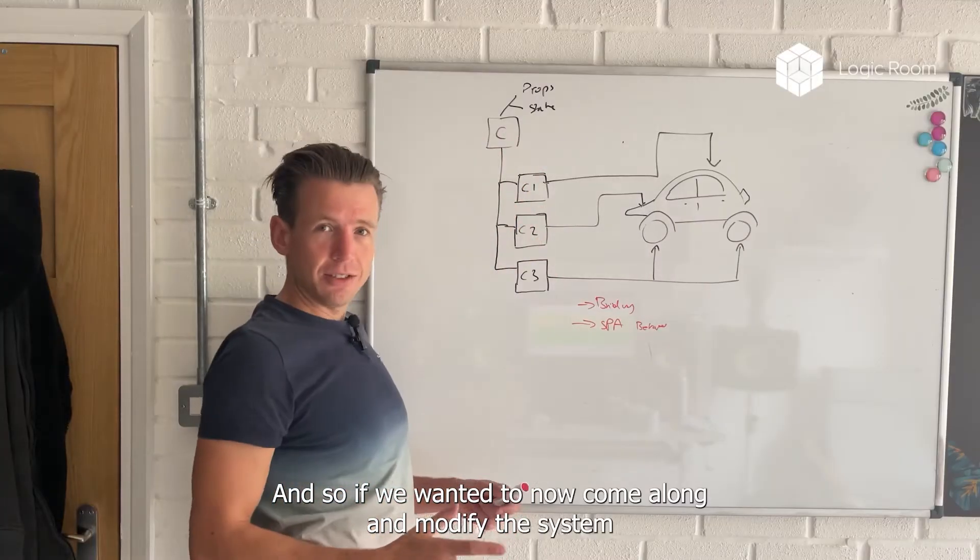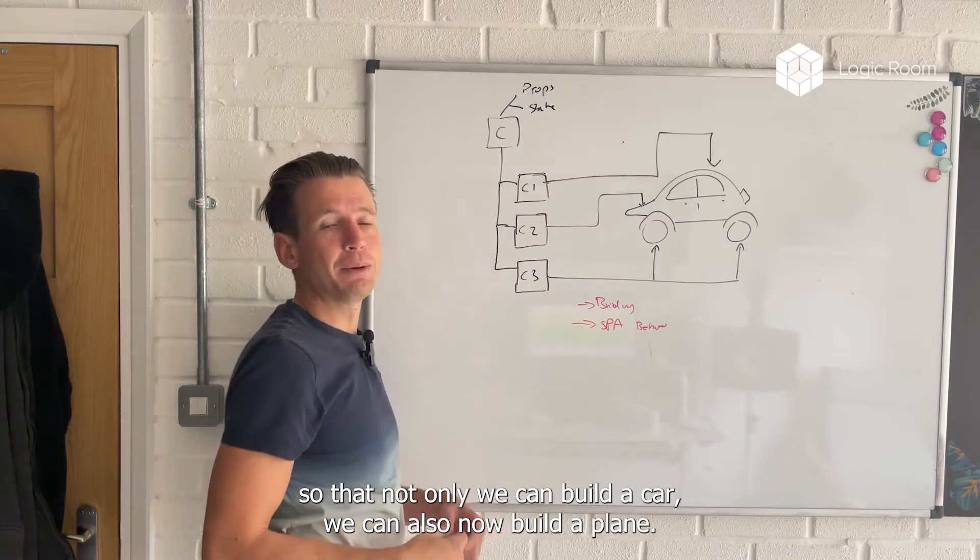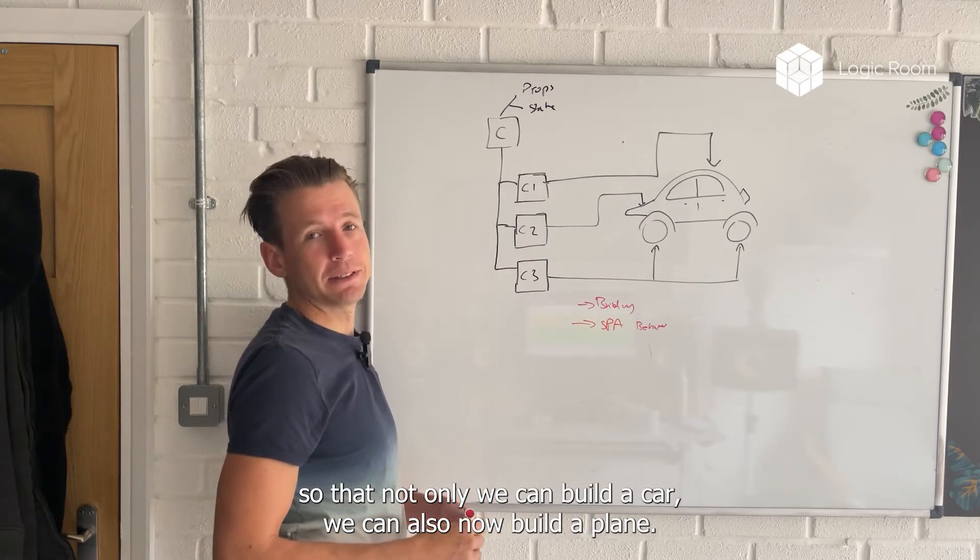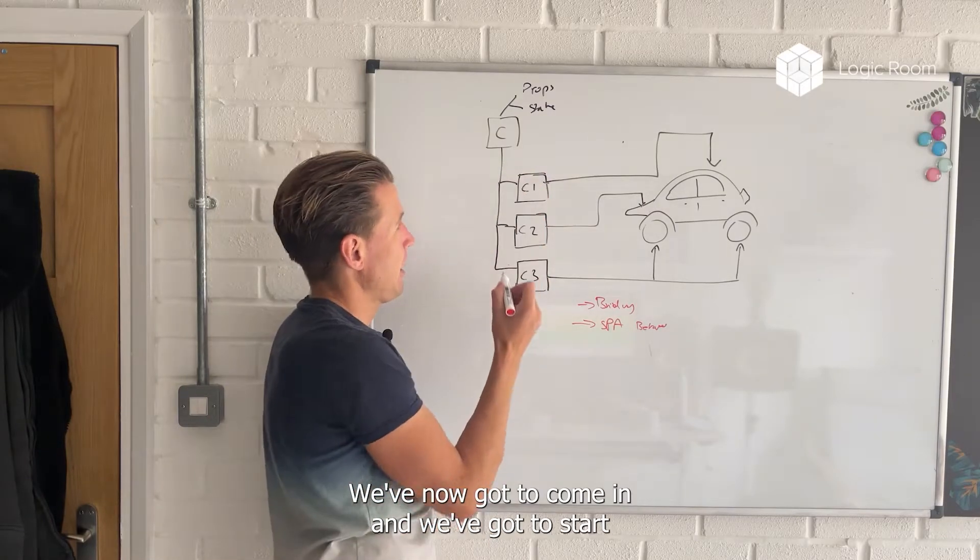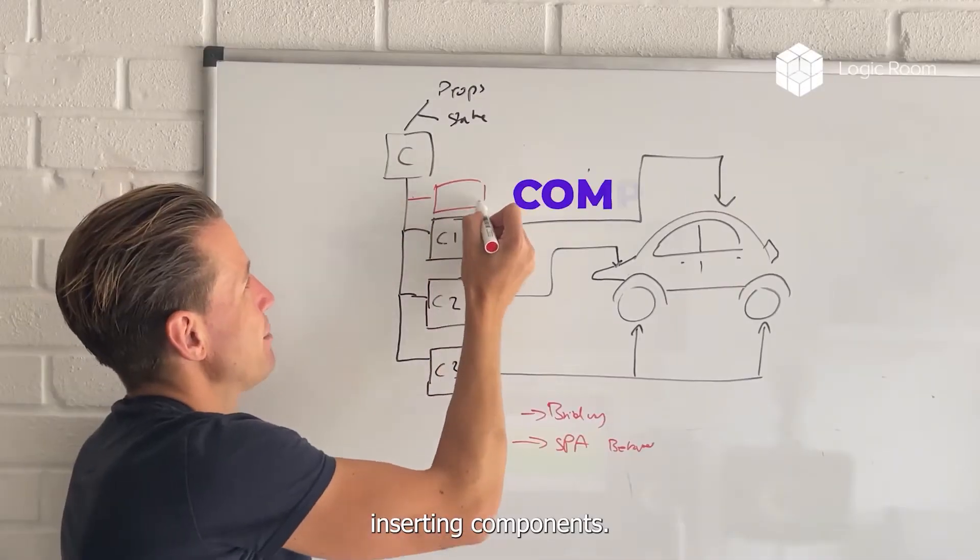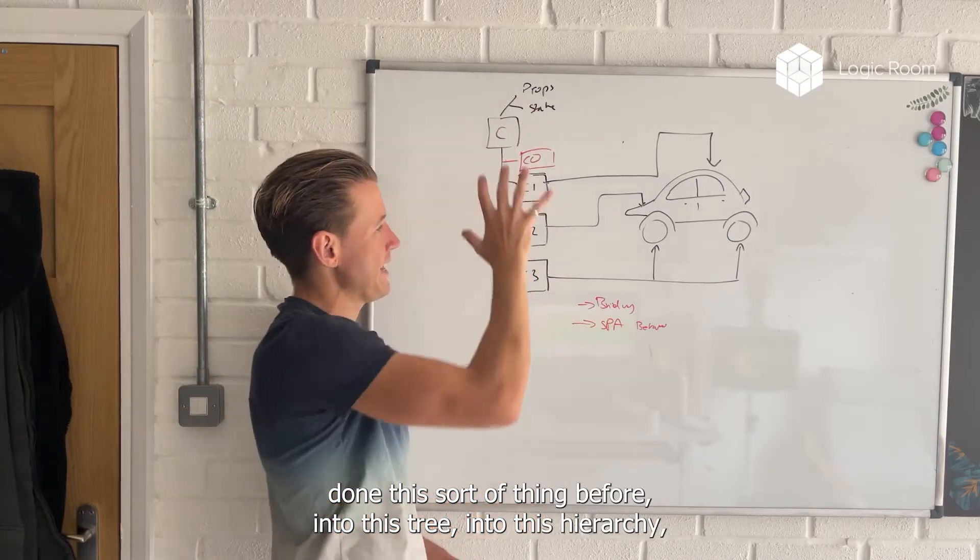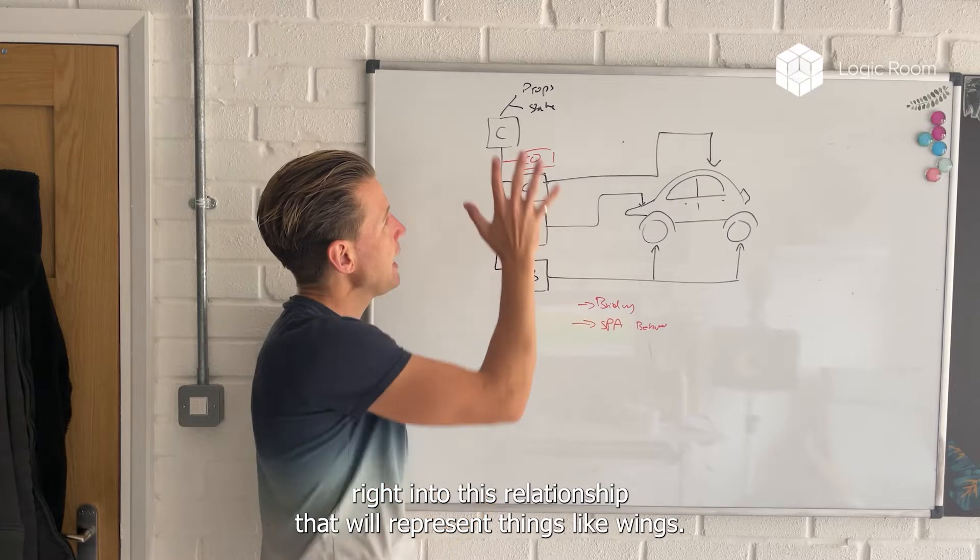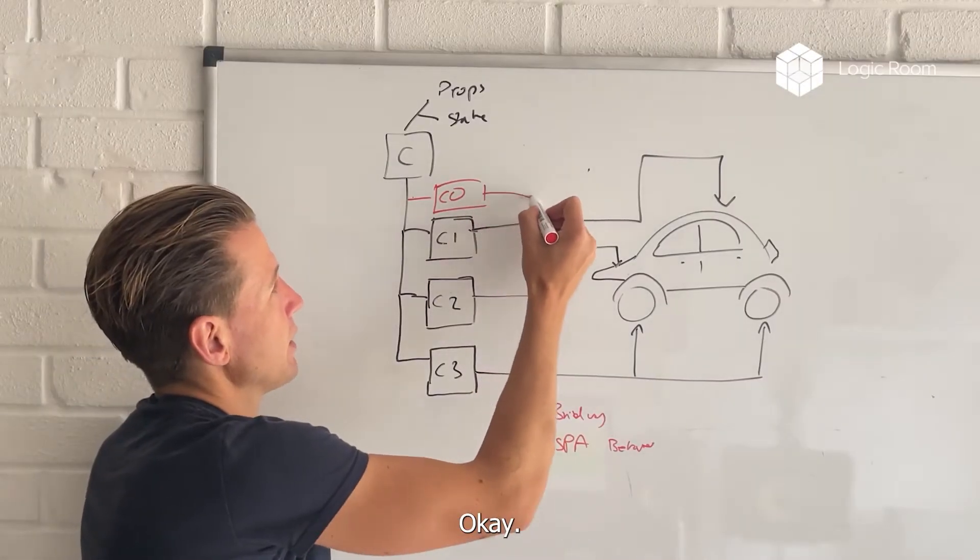The problem is that a plane has got a different, although a plane is still a vehicle, a plane is different. One thing that a plane has got that a car hasn't got is wings. And so if we wanted to now modify this system so that not only we can build a car, we can also now build a plane, we've now got to come in and start inserting components. I'm sure you've done this sort of thing before into this tree, into this hierarchy, right?